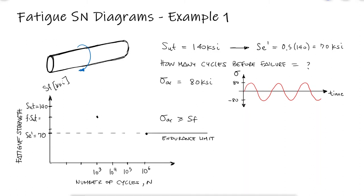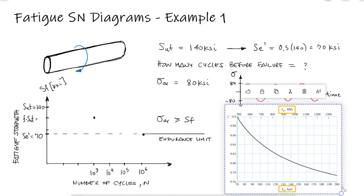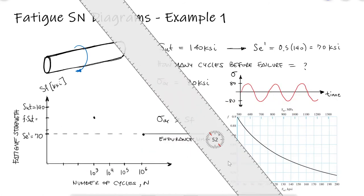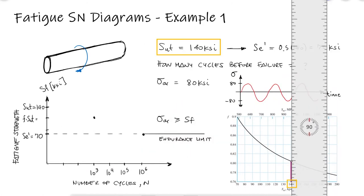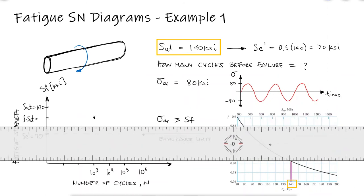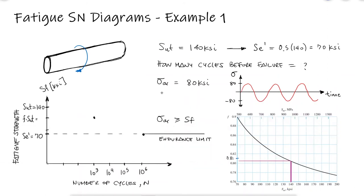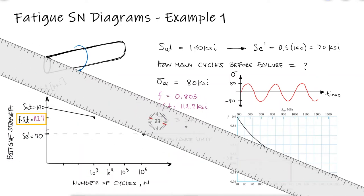The F coefficient is itself a function of the ultimate strength. So for a steel with an ultimate strength of 140 KSI, we find an F coefficient between 0.80 and 0.81. This means that the fatigue strength for 1000 cycles is equal to 112.7 KSI.